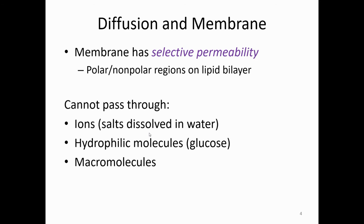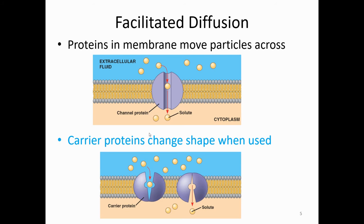The membrane has selective permeability, which means only some things can actually pass through. Our membrane is a phospholipid bilayer, so things can literally push themselves through, or depending on what they are, they can use the proteins within the cell membrane. Some things can go straight through the membrane; some things have to use special channels. If they're using special channels, we call that facilitated diffusion.